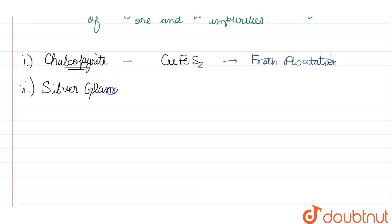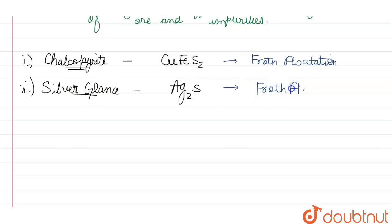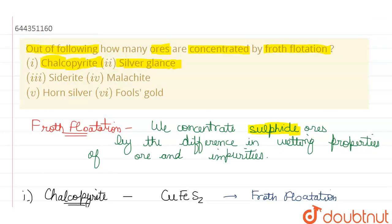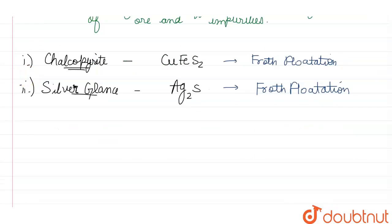The second one is silver glands (argentite). The formula of argentite is Ag₂S — silver sulfide. So it is also a sulfide ore and it can also undergo froth flotation.